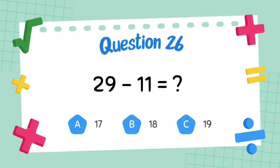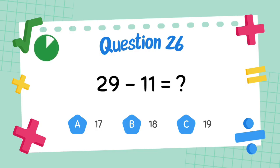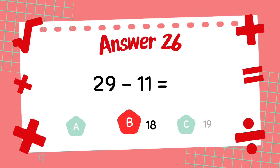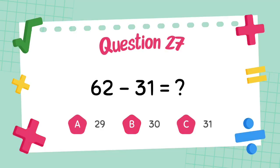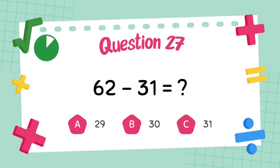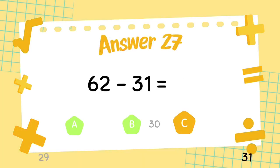What is 29 minus 11? The answer is 18. What is 62 minus 31? The answer is 31.